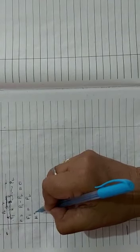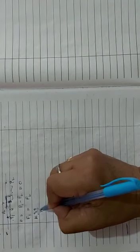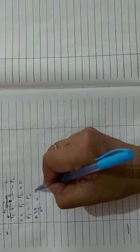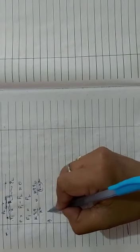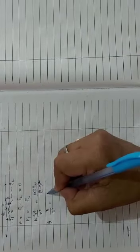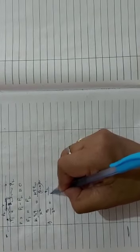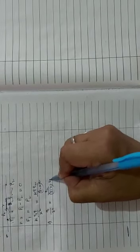F1 will be KQ1·Q by x squared, and F2 will be KQ·Q2 by (R minus x) squared. K and Q cancel, so you get Q1 by x squared equals Q2 by (R minus x) squared. Take square roots on both sides, cross multiply and solve for x.